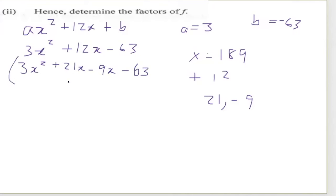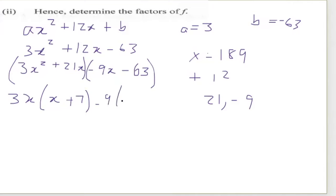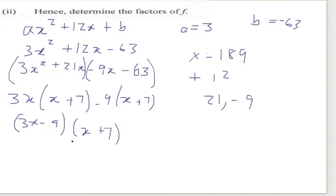Grouping: factor 3x from the first two terms gives 3x(x + 7), and factor negative 9 from the last two terms gives negative 9(x + 7). So the factors are (3x minus 9)(x + 7).